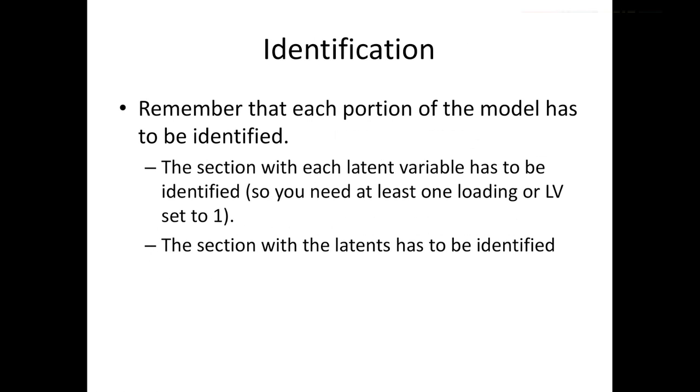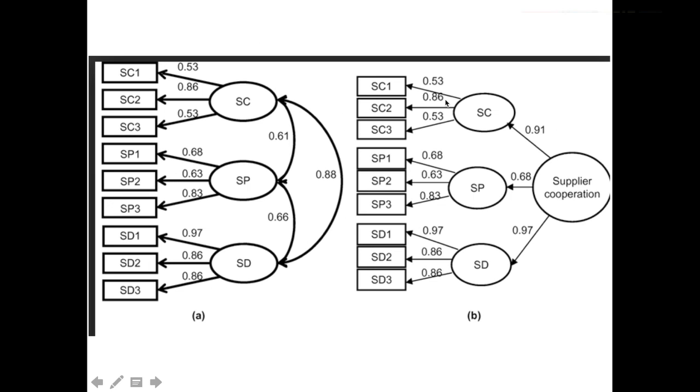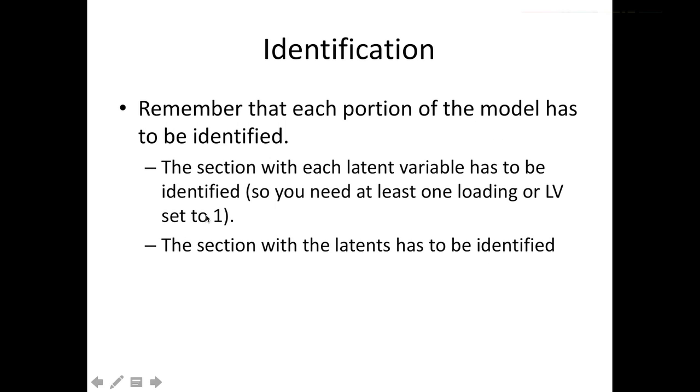Now what I'm going to do is compare that with a bifactor model after I talk about identification. And bifactor models have a different approach. So each portion of the model has to be identified. So you've got the lower level CFA portion and that's generally done. We've been setting marker variables. So we have a little one here on these. The section, the higher order section also has to be identified. So I will have to do something to make sure that piece is identified. And Levi mostly takes care of that for you.